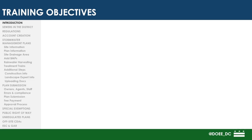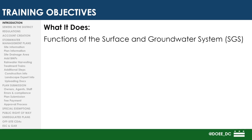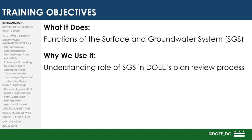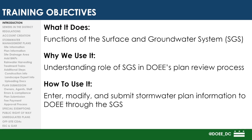By the end of this presentation, you will have learned three main things. First, you will learn what the surface and groundwater system can be used to do. We will then learn why DOEE uses the SGS and its role in DOEE's plan review process. Lastly, we will learn how to use the SGS to enter, modify, and submit stormwater plan information.